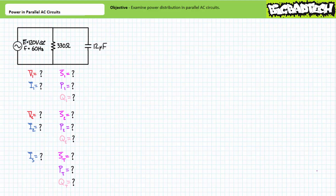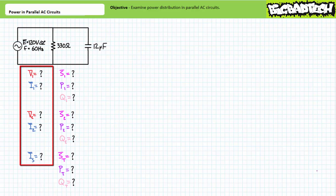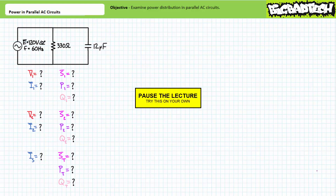Our first example problem features a parallel combination of two elements. The first element is a 330 ohm resistor, and the second element is a 12 microfarad capacitor. Stage one of this example problem necessitates we solve for the voltage drop across each element, the current through each element, and the source current. Once we have these values, we'll move on to stage two and examine power distribution within this parallel circuit. By all means, pause the lecture and try stage one on your own.